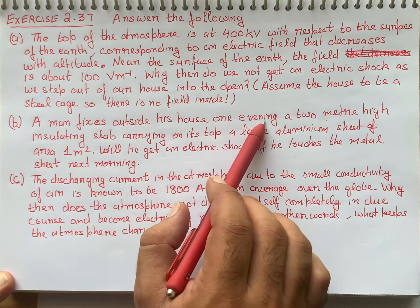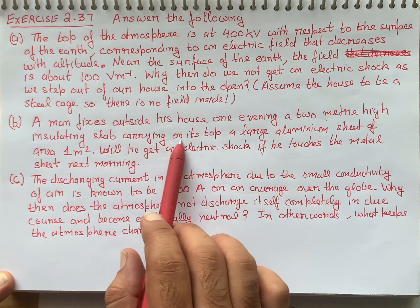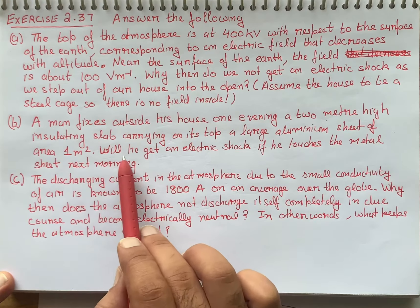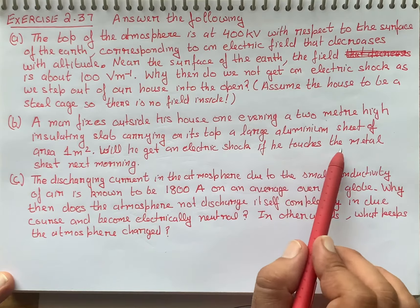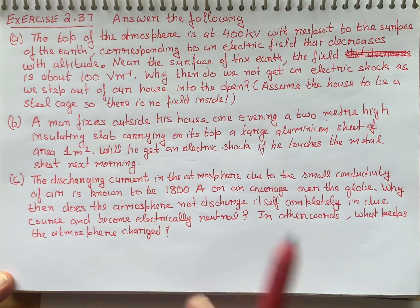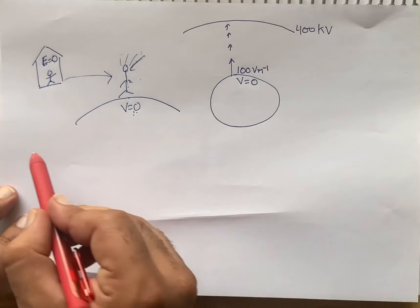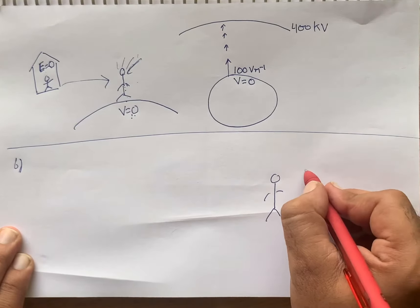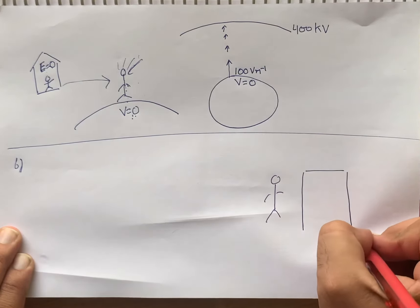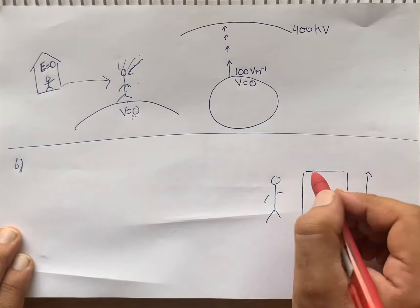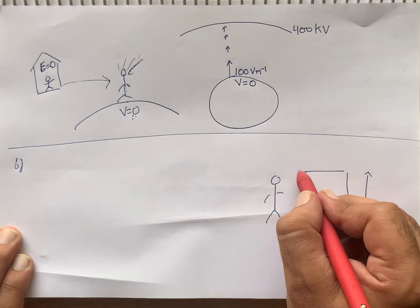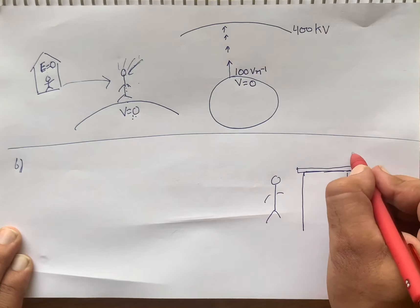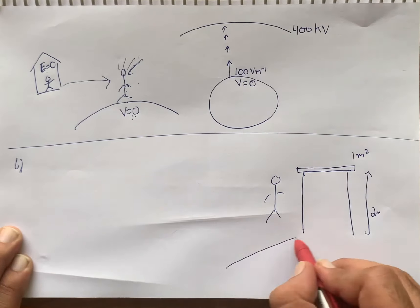Jo atmosphere hai, woh humari body ko charge karta raha — like humari body ko charge deta raha — atmosphere. But humari body equipotential surface form karti hai with the earth surface. Due to that, there is no potential difference between earth and our body. Jab potential difference hoga hi nahi humari body aur earth surface mein, toh charge flow hi nahi karega. Agar charge flow hi nahi karega, toh humein shock lagega hi nahi. The reason is that our body and ground are always at the same potential — they form an equipotential surface. Isi karan humein koi bhi electrical shock nahi lagta.